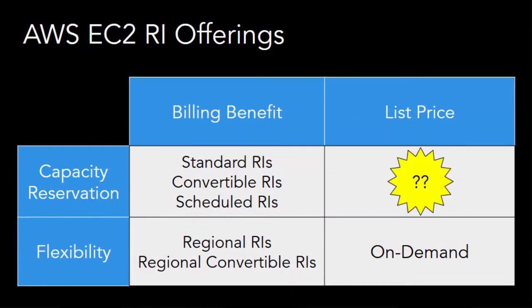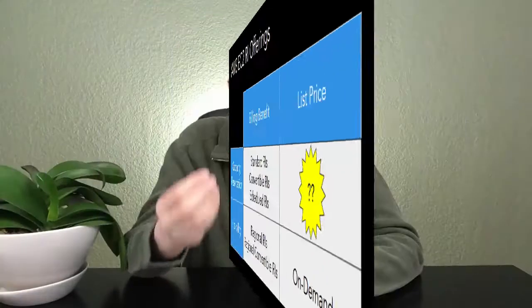By the way, did you notice there is a gap in the EC2 offering matrix? When I see something like this, I predict that Amazon is going to eventually release a product offering in this area.